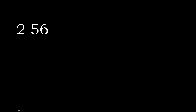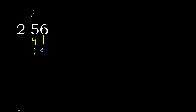56 divided by 2. Starting with 5: 5 is not less, so with 5, which number multiplied by 2 is nearest to 5 but not greater? 2 multiplied by 3 is 6 — that's greater. 2 multiplied by 2 is 4 — not greater. So 5 minus 4 is 1. Next.